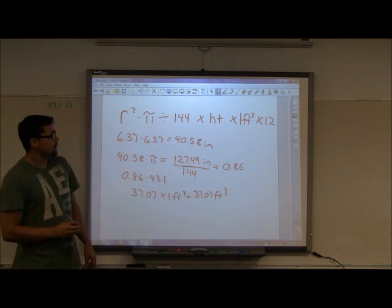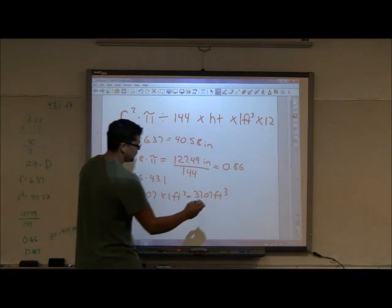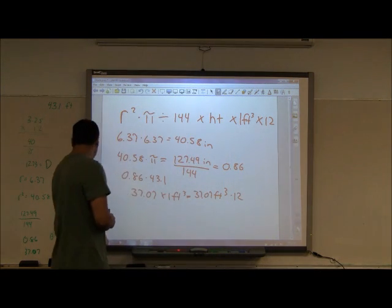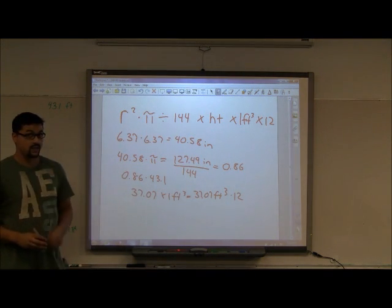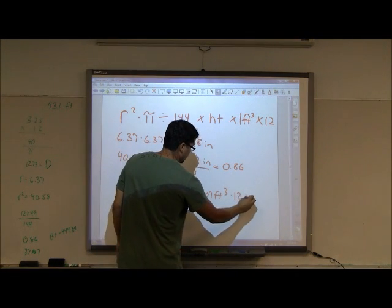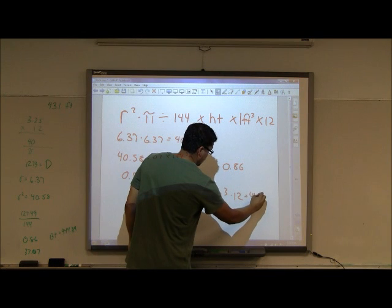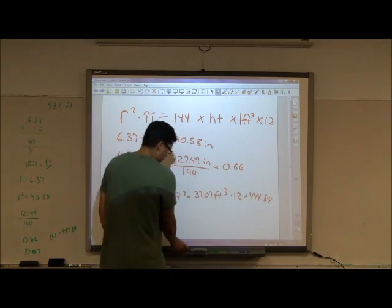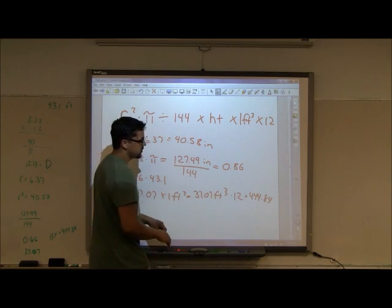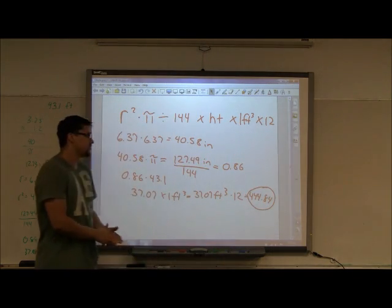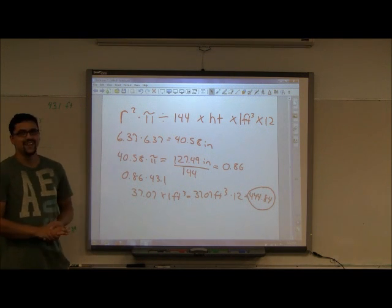The last thing we do is multiply that by 12. We get our board feet, which would be 444.84. So the board feet for our tree is 444.84.